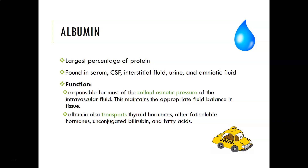Albumin is the largest component of total protein — more than half of it. Albumin is found in serum, spinal fluid, interstitial fluid, urine, and amniotic fluid. It is responsible for most of the colloid osmotic pressure of intravascular fluid, maintaining appropriate fluid balance between tissue and the intravascular compartment. Albumin also transports thyroid hormones, other fat-soluble hormones, conjugated bilirubin, fatty acids, and even some drugs.